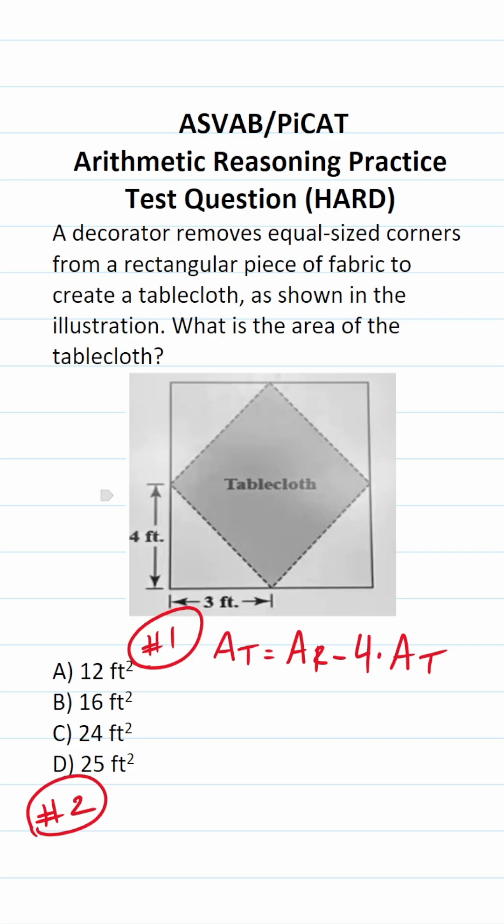Why four? Because we have four identical triangular corners. We have one here, second one here, third one here, and a fourth one here.